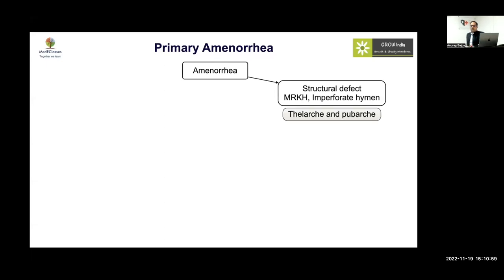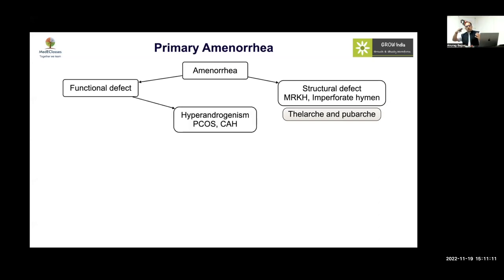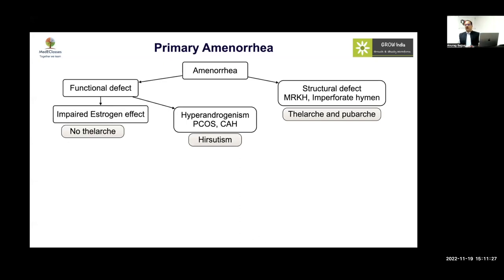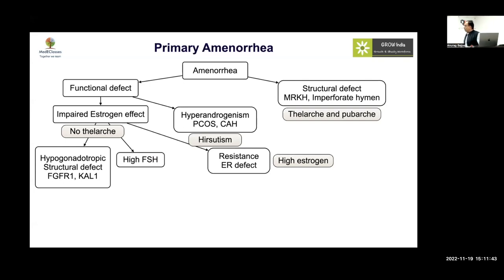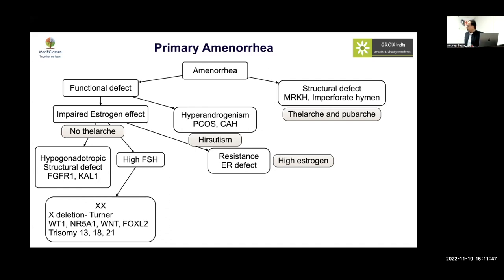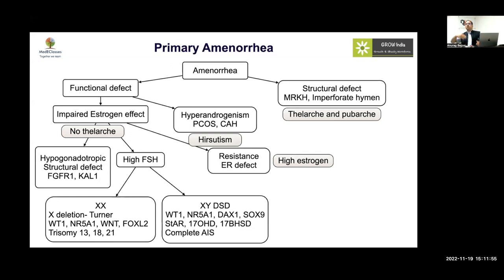If a young girl presents with acute abdominal pain and an abdominal lump, look at breast development and ask whether there has been any prior bleeding — this is cryptomenorrhea, an easy diagnosis to make but often missed. Structural defects will have normal breast development and normal pubic hair development. A functional defect means too little estrogen or too much androgen; androgen excess — as in PCOS or CAH — can also cause primary amenorrhea with hirsutism.